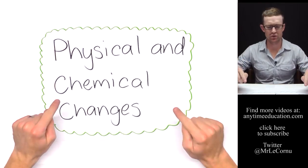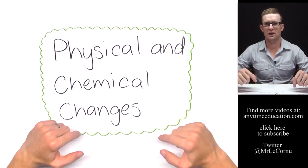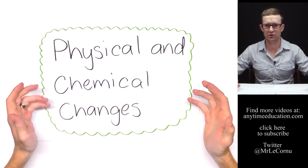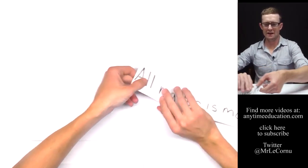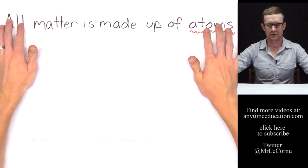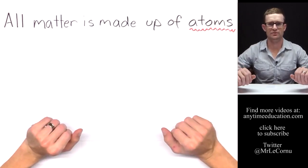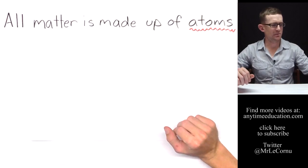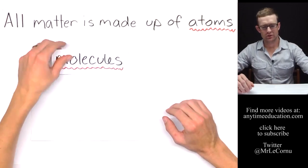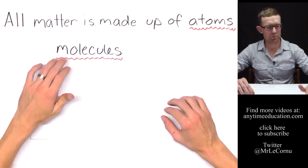So let's talk about physical and chemical changes and the differences between the two. We know that all matter is made up of these things called atoms, and sometimes these atoms combine to form molecules.